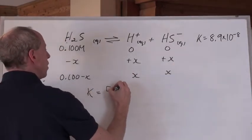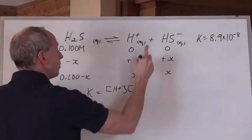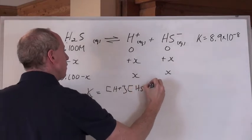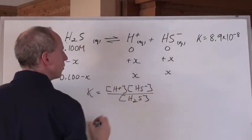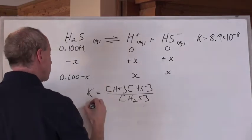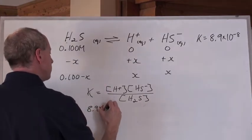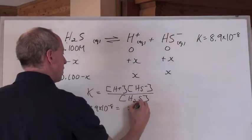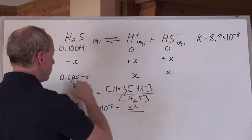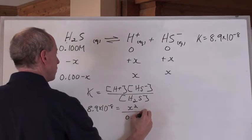What does K equal? It equals [H+] times [HS-] divided by [H2S]. Let's plug the numbers in. 8.9 times 10 to the negative 8 equals X times X, so it's X squared over 0.100 minus X.